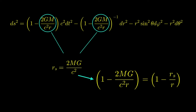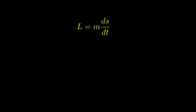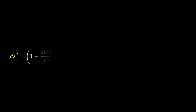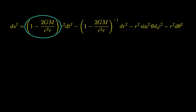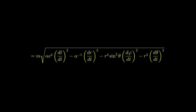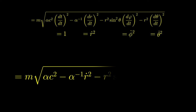We aim to write down the Lagrangian of a particle with mass m moving towards a black hole. The Lagrangian is m times ds/dt — since the Schwarzschild metric is in squared form, we square the fraction and take the square root afterwards, giving m times the square root of (ds/dt) squared. We introduce the parameter alpha equal to 1 minus 2GM divided by c squared r. Plugging in the Schwarzschild metric and dividing each component by dt squared, we get the Lagrangian of a particle moving in the spacetime outside the event horizon of a black hole.